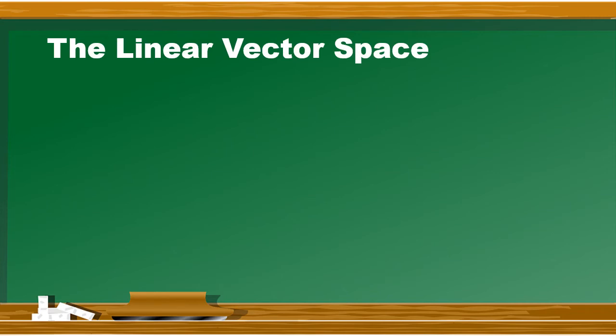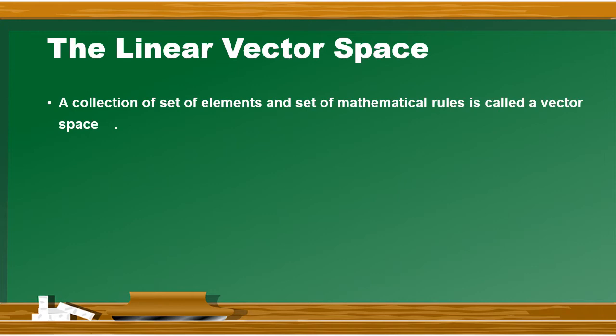तो आईए अब शुरू करते हैं the linear vector space. Vector space क्या है? ये almost Euclidean space की तरह ही एक space है. Euclidean space के अंदर commonly हम एक set लेते हैं scalars का और एक set लेते हैं vectors का, लेकिन उसको restrict किया जाता है three dimension में. उसको n dimension में भी extend किया जा सकते हैं. उसी तरीके से एक linear vector space है जिसको vector space का नाम दिया जाएगा.